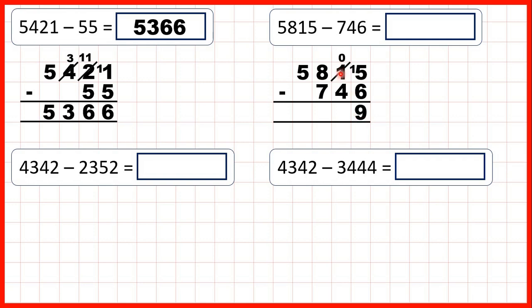Now because we've exchanged, we have 0 tens, but need to subtract 4. So we need to exchange again. We go to the left, 1 less, 1 in front — so we've exchanged one of our hundreds for 10 more tens. So now 10 minus 4 is 6, 7 minus 7 is 0, and 5 minus nothing is 5. So our answer is 5069.